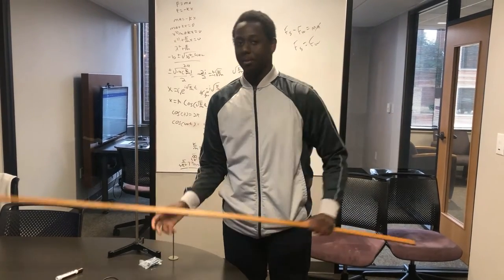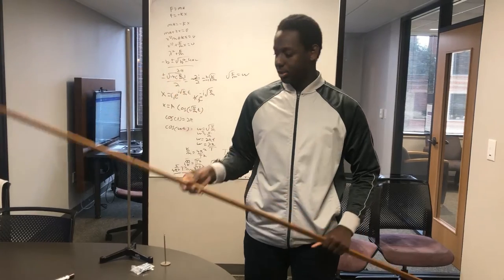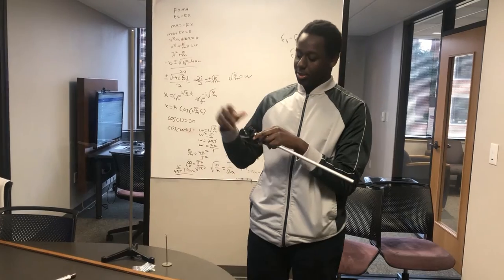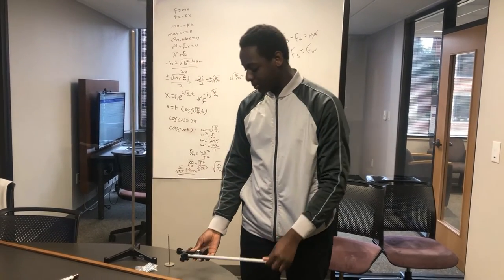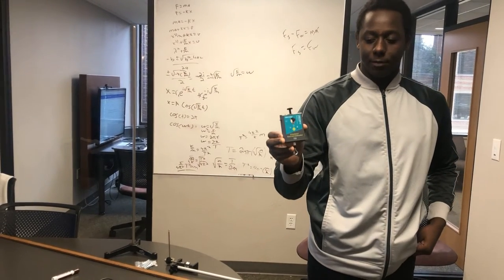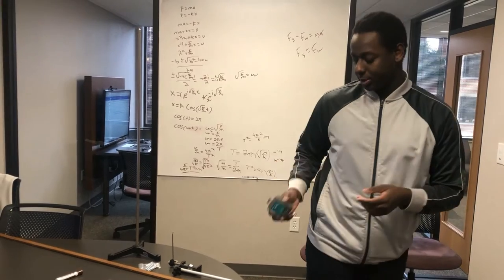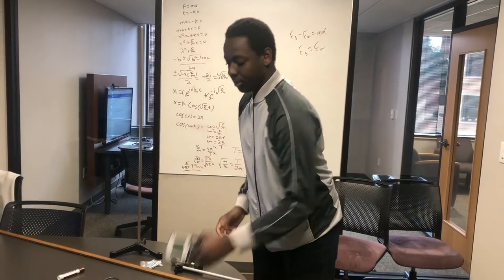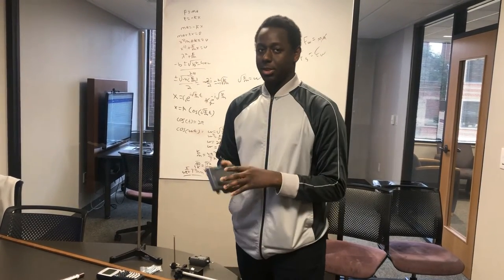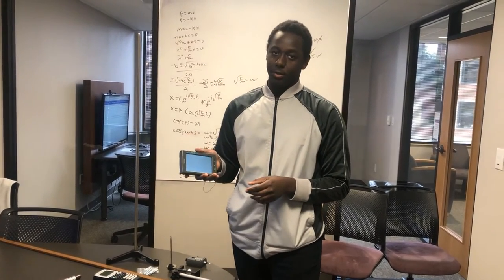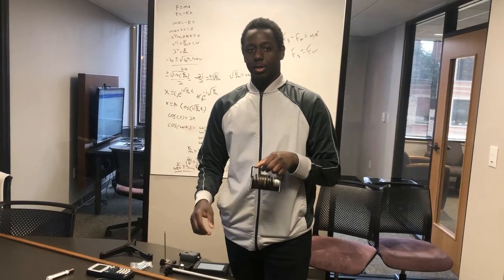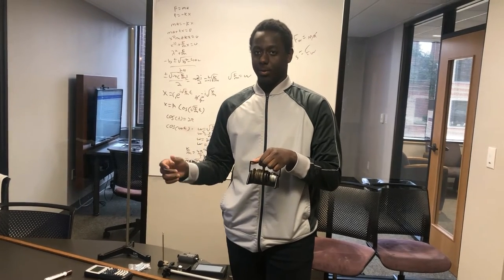We also need a meter stick to measure the change in the length of each of the springs that we will be using, a clamp to connect to the ring stand and hold our force sensor and our springs, a force sensor in order to show the amount of force that is exerted onto the spring, a calculator for any needed calculations, a LabQuest in order to see the force recorded by the force sensor, and a bunch of weights that we can hang from the springs.